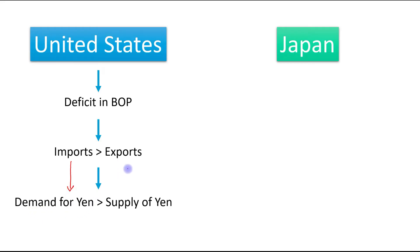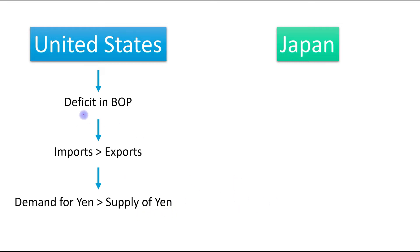Imports are directly linked to the demand for foreign currency, and exports are directly linked to the supply of foreign currency. So if imports from Japan are greater than exports to Japan, demand for yen is greater than supply of yen. Now, if there is a deficit in the BOP of the United States, then Japan will have a surplus in its BOP — the deficit of one country is another country's surplus.